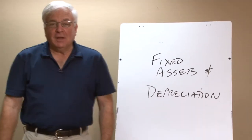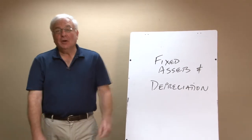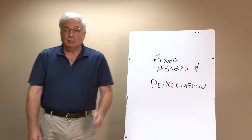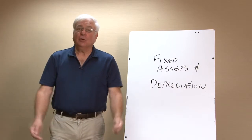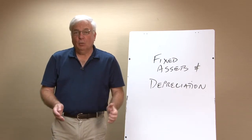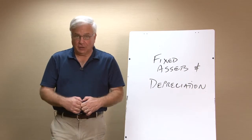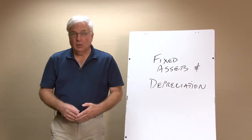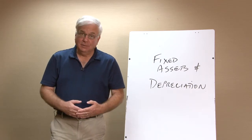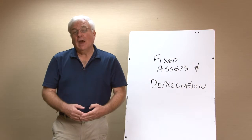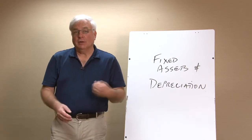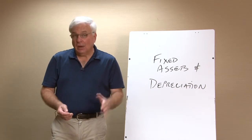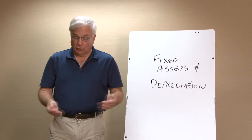Hello out there in cyber accounting land. It's Professor Ebit here to help you master it quick. In this session, we'll look at the accounting for fixed assets and also for depreciation. We'll cover the costs included in the fixed asset cost, three different methods to calculate depreciation expense, why we do depreciation, and what happens when we get rid of the asset later on — we might sell it, junk it, or trade it in, which can cause a gain or a loss.